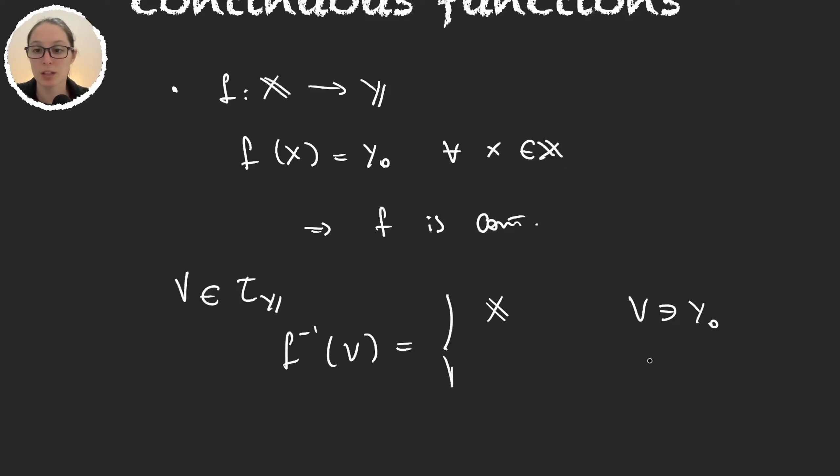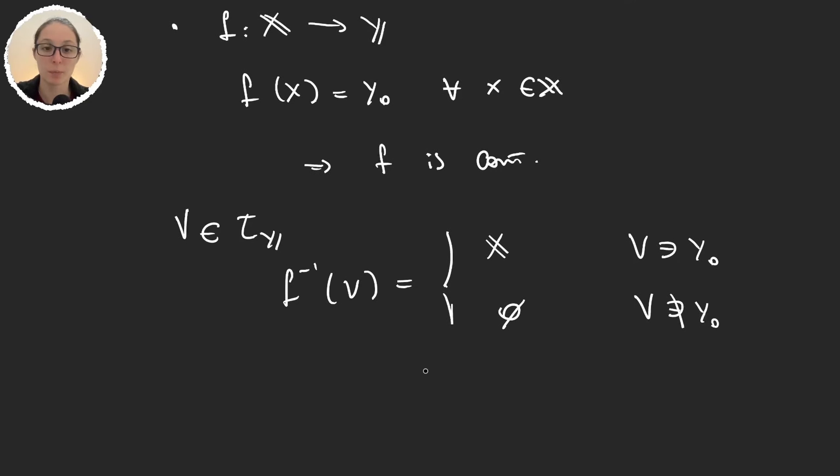And if y0 is not an element of b, then the preimage will be the empty set. And these two sets are always in a topology. So the preimage of b through f is always in the x topology. It doesn't matter which two topologies we're working with, the constant function is always continuous.